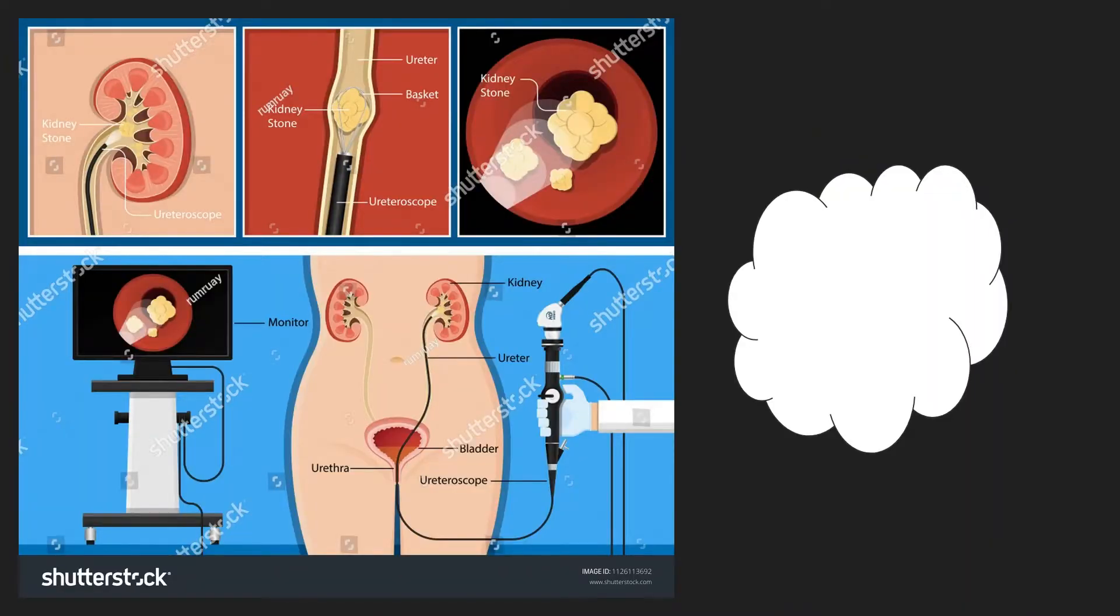For large stones that are larger than one centimeter, treatment will involve surgery. The idea is that a tube will be put through the tract that urine travels. Then, using a basket at the end of the tube, the stone is pulled out.